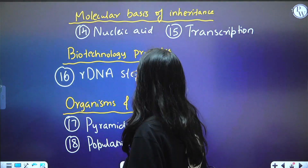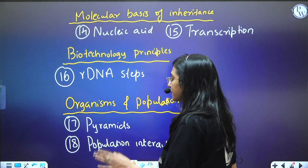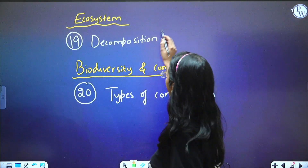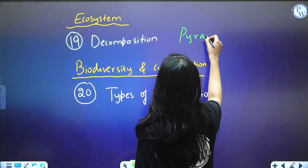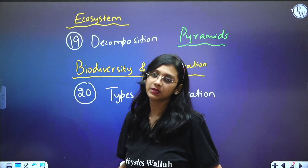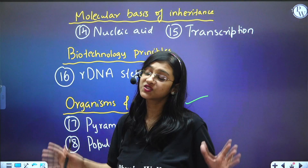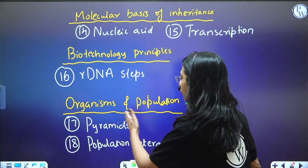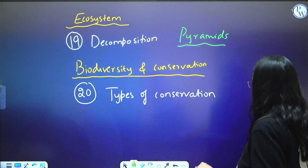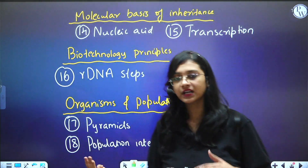From Organisms and Populations as well as Ecosystem, pyramids are very important — both the pyramids under Ecosystem and those under Organisms and Populations. Questions are coming from both chapters, so I have mentioned pyramids here for both. Also, population interaction — mutualism, amensalism, commensalism — questions are coming continuously from this topic for many years.